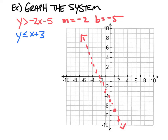I'm going to hold off on the shading for just a moment. The next one is y is less than or equal to x plus 3. That has a slope of 1, so you go up 1 over 1, and a y-intercept of 3. I start at my y-intercept of 3 and the slope of 1 goes up 1 and over 1 right through the diagonal. Because it's less than or equal to, I connect these with a solid line.